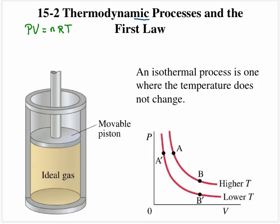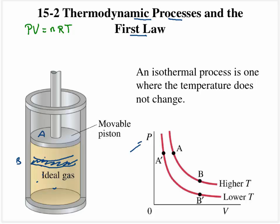Now let's look at several thermodynamic processes and how they relate to the first law. A process means going from one state to another state. If we had a movable piston with an ideal gas and we compressed it, we'd go from state A to state B, where we have a different volume, probably a different pressure, and possibly a different temperature. When we look at these processes, we typically use a pressure versus volume chart, a PV diagram, going from state A to state B.